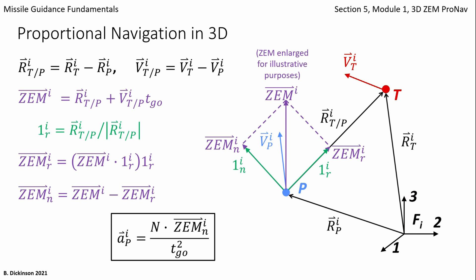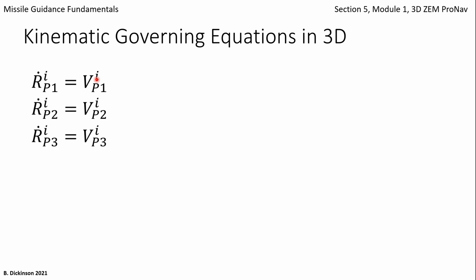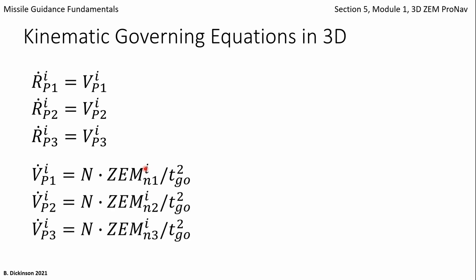Now that we've covered how PRONAV can be implemented in 3D with zero effort miss, let's talk about the kinematics of the pursuer and target. The time rate of change of the pursuer position in the 1 direction of the inertial coordinate system is equal to the velocity of the pursuer in the 1 direction. We can apply that in the other two directions. The pursuer acceleration along the 1 direction in the inertial coordinate system is the PRONAV law implemented in the 1 direction. Key here is that we have zero effort miss normal to the line of sight, but it's the one component of that in the inertial coordinate system. A similar thing is implemented in the other two coordinate directions.